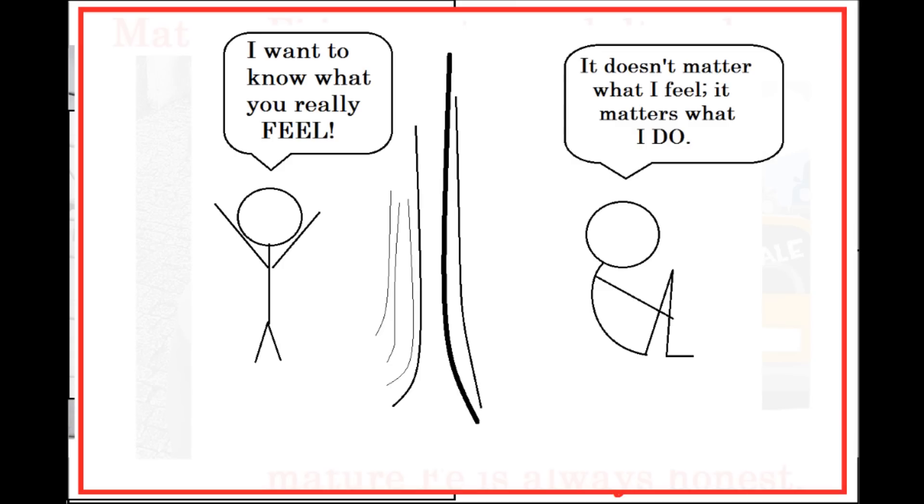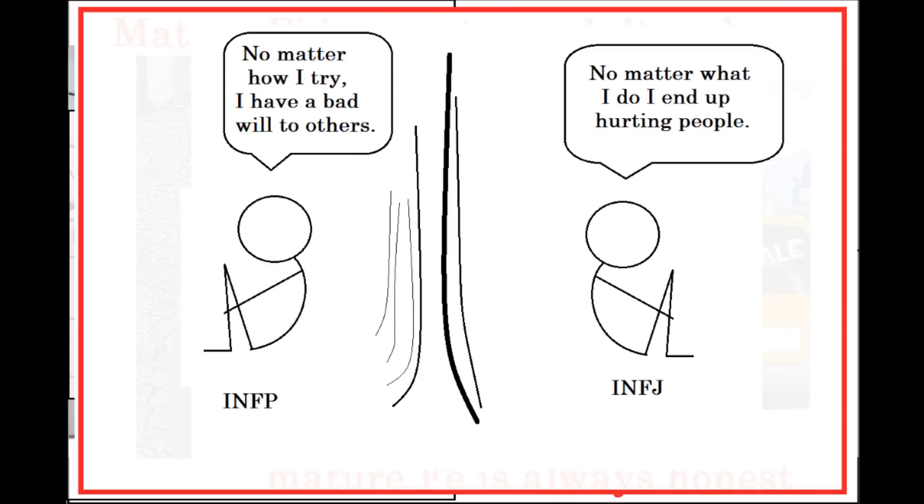In a sense, the INFP wants to see the platonic form of the INFJ's feeling, but the INFJ insists that the mere appearances of their feeling are what really matter. The INFP wants the INFJ to reveal how they do their magic tricks, but the INFJ sees that as defeating the point of a magic trick, to entertain and delight the audience. In this way, the INFJ cares about what they actually do, about the effects of their actions, while the INFP is more concerned about the intentions and the purity behind their actions.